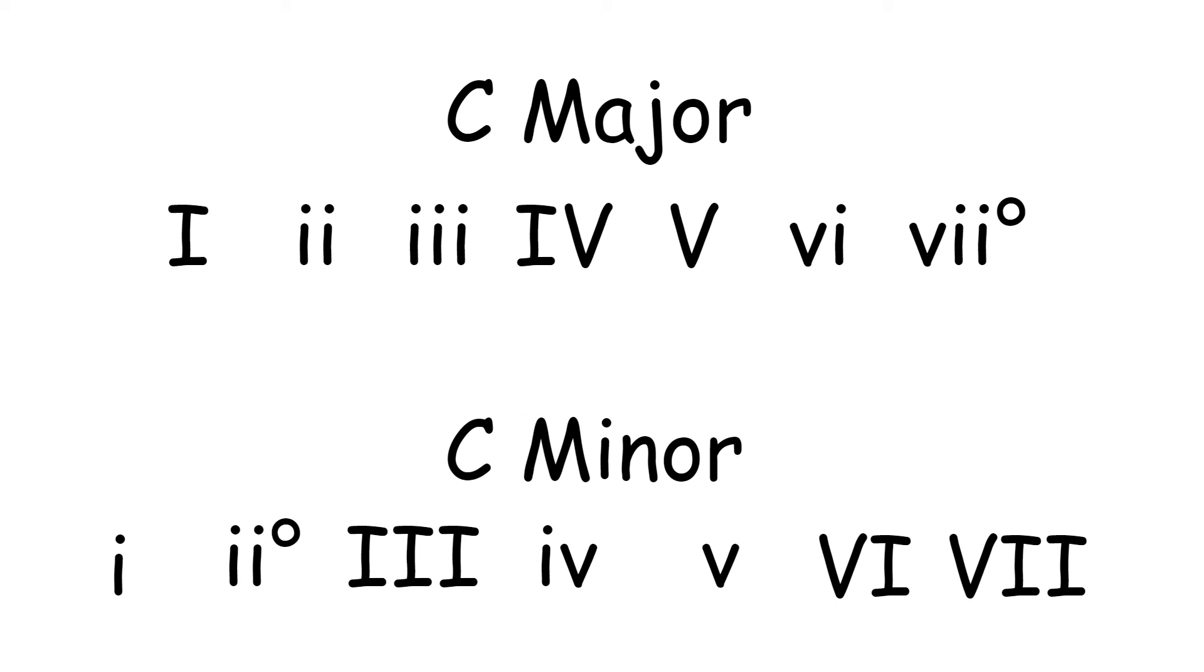The next part to remember is where the diminished chord belongs. For me it's hard to remember that in a major scale the diminished is the seventh, and in a minor scale the diminished is the second. That's a little thing you have to remember; there's not really any easy pattern to remember that.